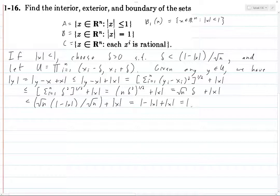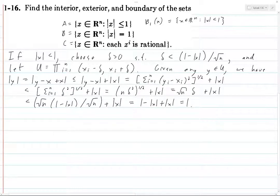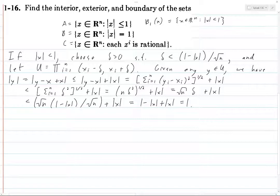Since we chose delta to be less than (1 minus the norm of x) divided by the square root of n, we get: square root of n times (1 minus norm of x) divided by square root of n, plus norm of x. The square roots of n cancel, giving us 1 minus the norm of x plus the norm of x, which equals 1. So the norm of y is strictly less than 1, and this holds for every y in U.